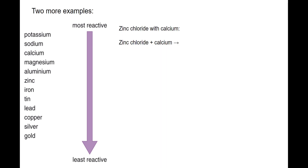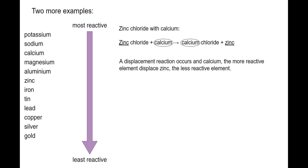Two more examples. If we look at zinc chloride with calcium — zinc chloride is our compound, calcium is just in the form of calcium metal — we need to look at our reactivity series and compare the reactivity of zinc and calcium. We underline the least reactive and circle the most reactive. Between zinc and calcium, zinc is below calcium, so we underline zinc and circle calcium. Calcium is going to displace zinc, and we get calcium chloride and zinc metal.